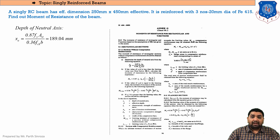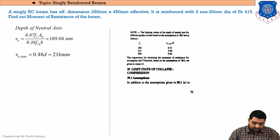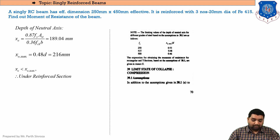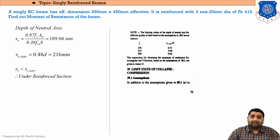To find MU, we need to find the value of XU max. XU max can be obtained from page number 70. For Fe 415, the XU max / d ratio will be 0.48. Solving it, we get XU max = 216 mm. XU was 189.04 mm and XU max is 216 mm. So the relation here comes out that XU is less than XU max. Whenever XU is less than XU max, the section is under-reinforced. So whenever we are analyzing a singly reinforced section, the first step will always be to find the relation between XU and XU max.